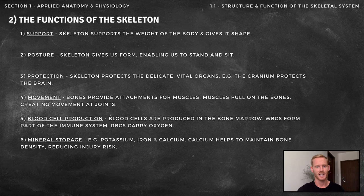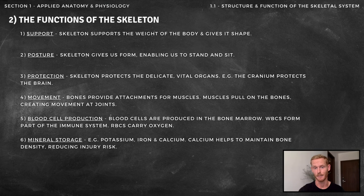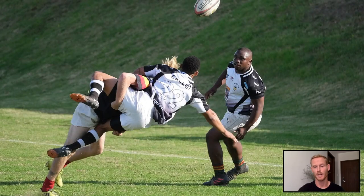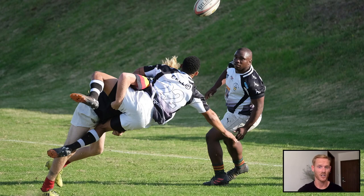The final function of the skeleton is to store minerals like potassium, iron and calcium, which is particularly important for maintaining bone density. For example, mineral storage benefits rugby players as it reduces the risk of obtaining a bone injury when tackling. That's the functions of the skeleton done.